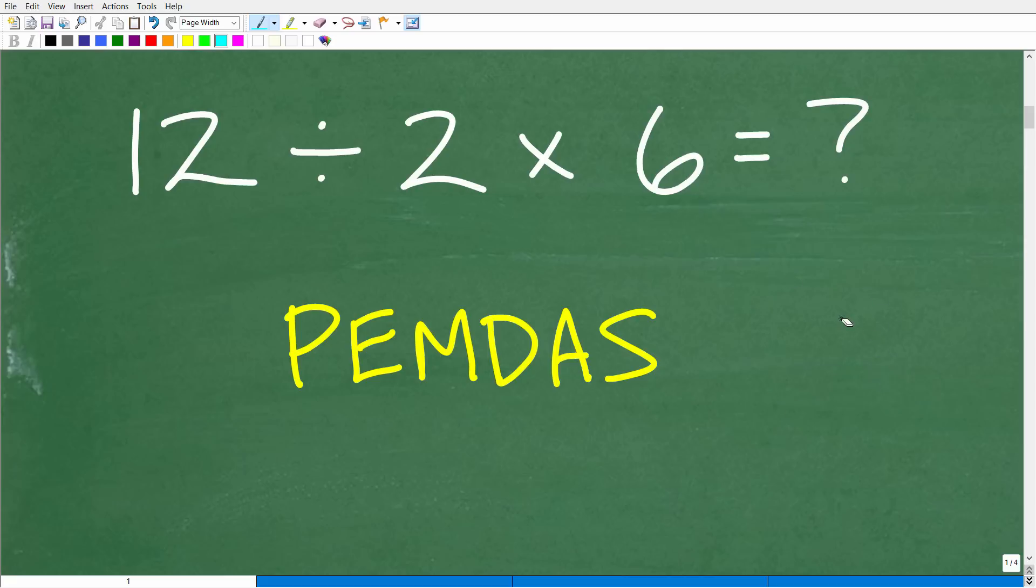Of course there's only one correct order and that order is described to us by this checklist right here and this is called PEMDAS. Right, so this is effectively our checklist to take the correct order when we have a math problem with multiple mathematical operations.